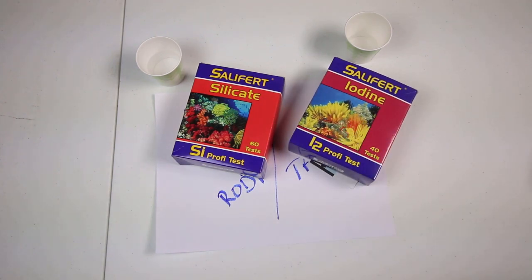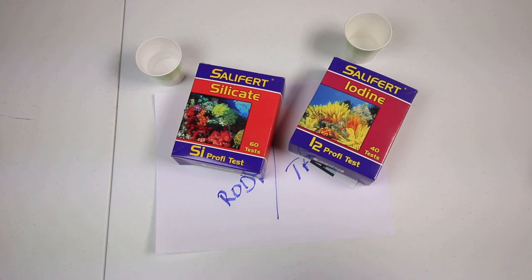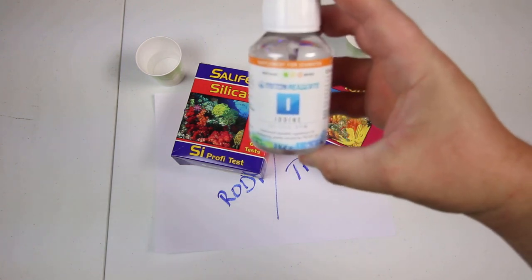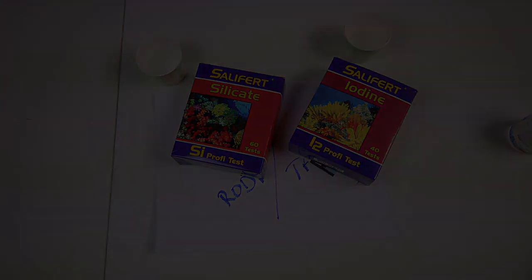We went over this with the test kit that we talked about from Triton Labs and what my results were, and both of these numbers were off. My silicates were very high and iodine I don't think was quite where it was supposed to be. I think it was a little low if I recall correctly, which is why we also have this Triton's iodine. But let's jump right into this because we want to get some results.